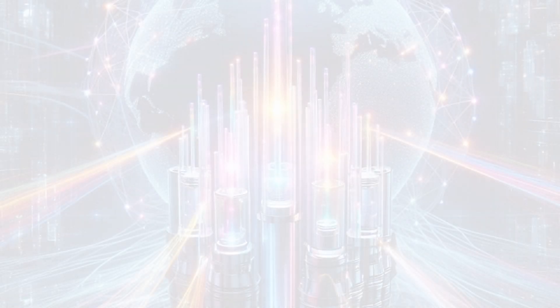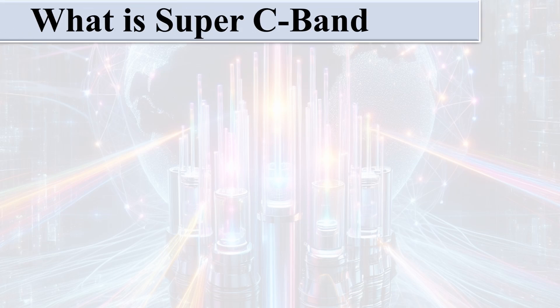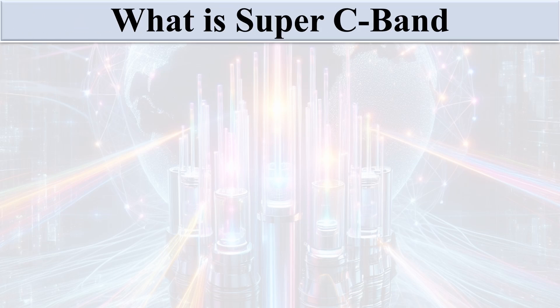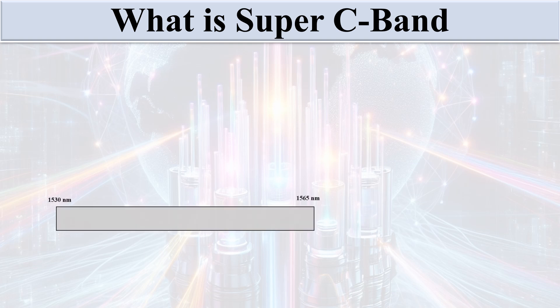In today's video we are going to discuss about Super C Band. What is Super C Band? Super C Band is nothing new — it's an extended version of the extended C band. You can see here, this is 1530 nanometers to 1565 nanometers.